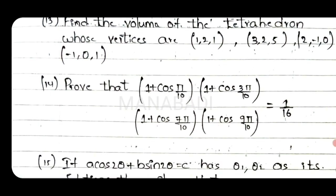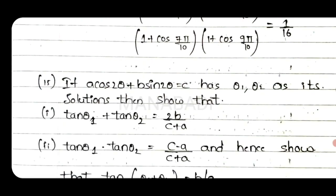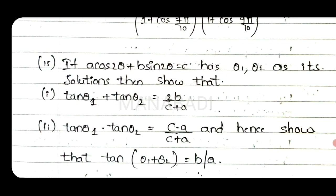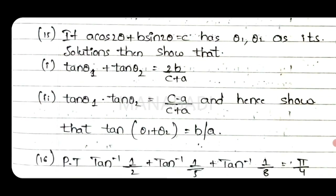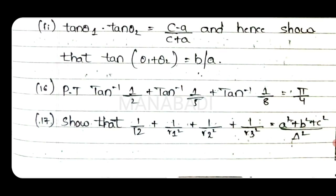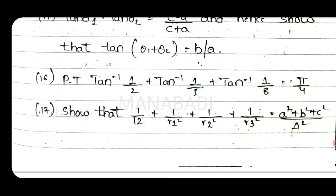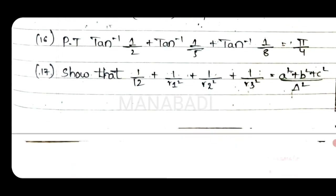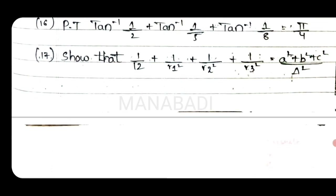Fourteenth question: prove that 1 plus cos pi by 10, into 1 plus cos 3 pi by 10, into 1 plus cos 7 pi by 10, into 1 plus cos 9 pi by 10 equals 1 by 16. Fifteenth question: if cos 2 theta B sin 2 theta equals c, show that — prove. Prove that tan inverse 1 plus tan inverse 1 by 5 plus tan inverse 1 by 8 equals pi by 4. Next, show that r1 squared plus r2 squared plus r3 squared equals a squared plus b squared plus c squared by det squared. This is the 17th question.